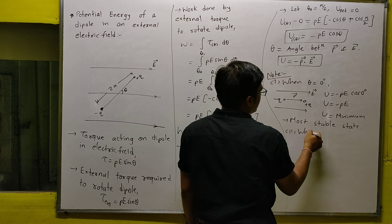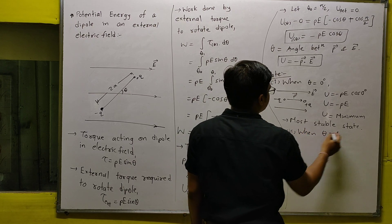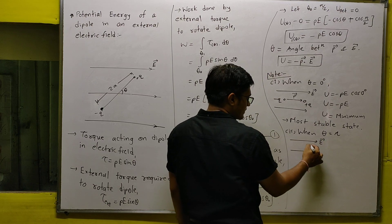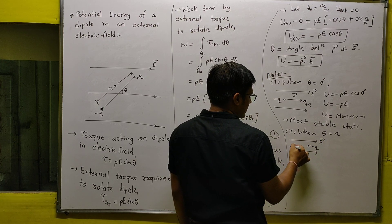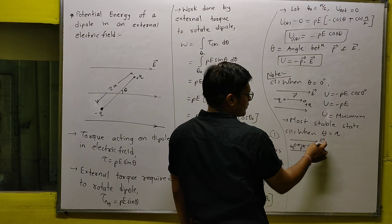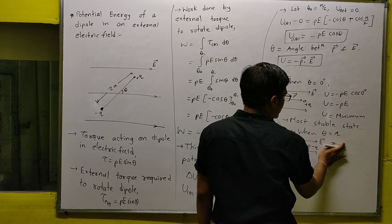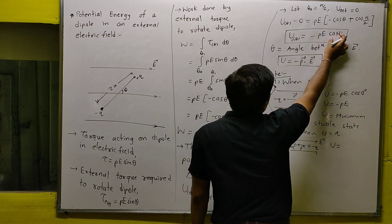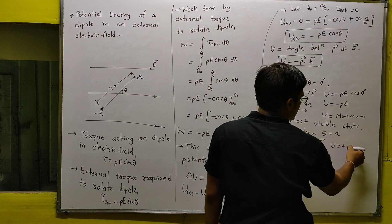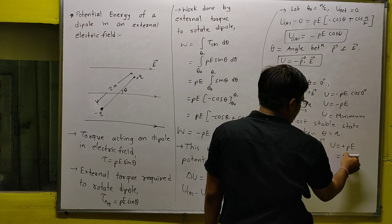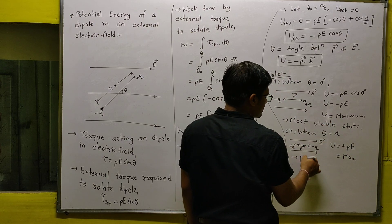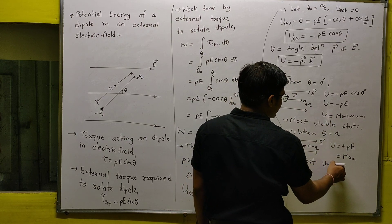Second, when θ = π: the electric field points in one direction and the dipole moment (from negative to positive charge) is in the opposite direction. So U = −PE cos π = −PE × (−1) = +PE. This is the maximum energy. Whenever the potential energy is maximum, the system is in its most unstable state.